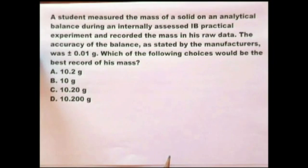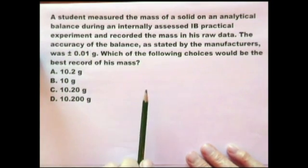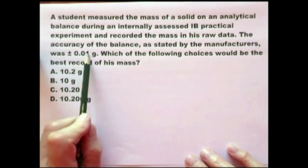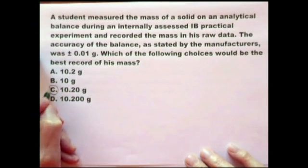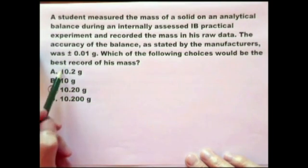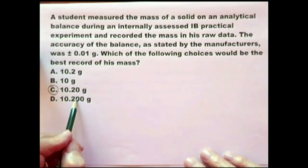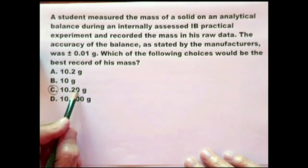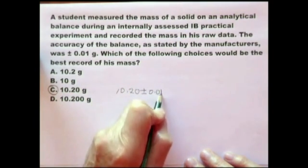In this case the examiner is asking you: do you understand what this means — plus or minus 0.01? And the answer is there must be two decimal places. The only one that fits is 10.20. That doesn't have enough decimal places, that doesn't have any decimal places, that has too many decimal places. The best record of the mass is 10.20, written as 10.20 plus or minus 0.01.